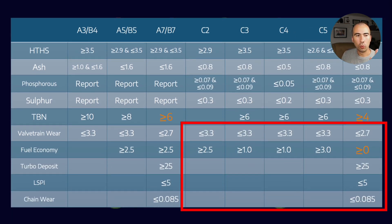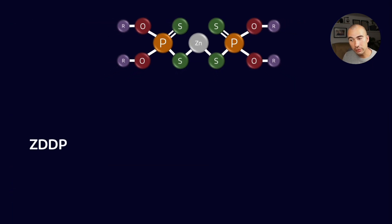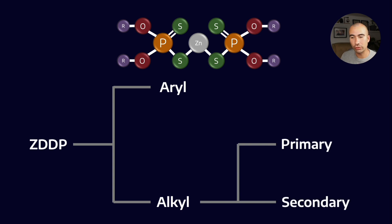Now, one of the other ways that we can get around this is to use different types of ZDDPs. When you've got ZDDP, it's really a family of different molecules. So, there's aryl and alkyl ZDDPs, and then you've got also primary and secondary ZDDPs.